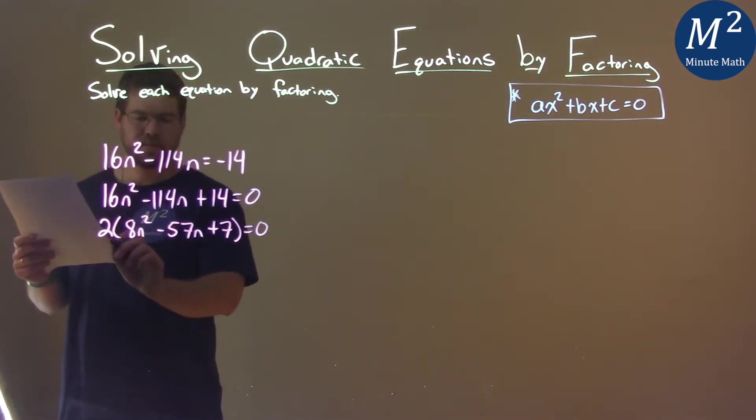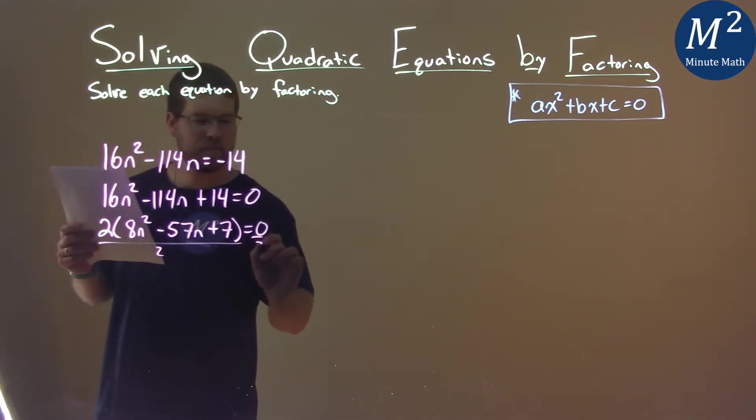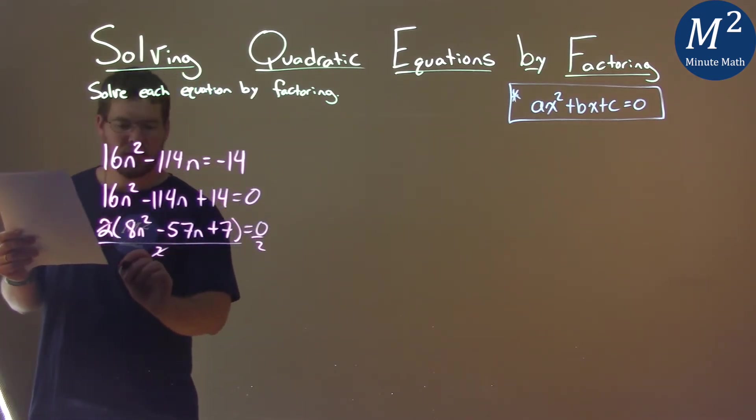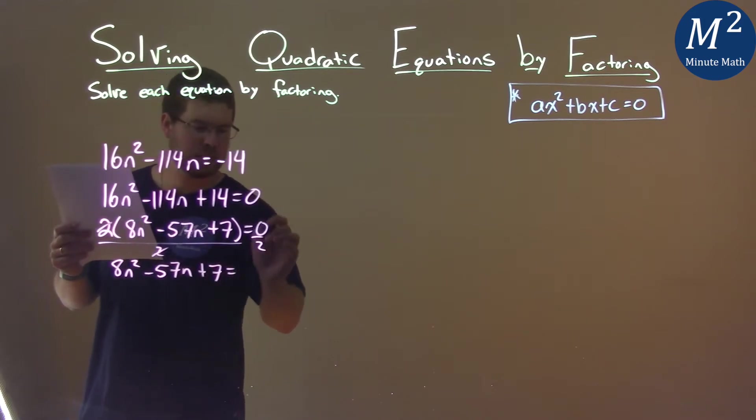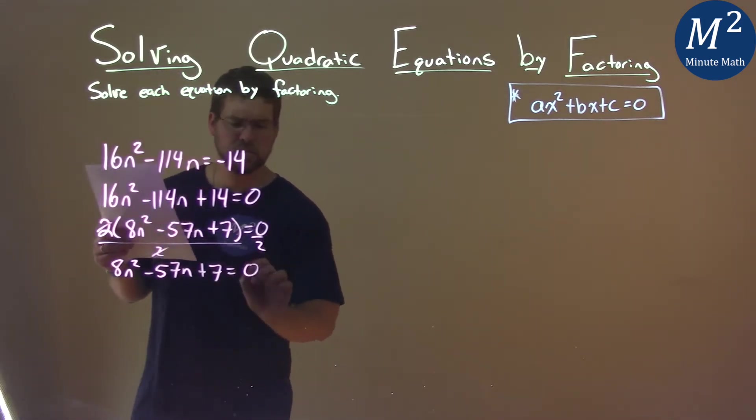Well, I don't want that 2 there anymore, so if I divide both sides by 2, the 2's cancel, and I have 8n squared minus 57n plus 7 equals, well, 0 divided by 2, which is 0.